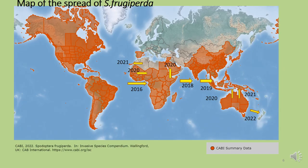This map shows the spread of the fall army worm. In 2016 the insect was first detected in sub-Saharan Africa, and within six years it spread to most parts of Africa, Asia, Australia, and this year it was also confirmed in New Zealand.